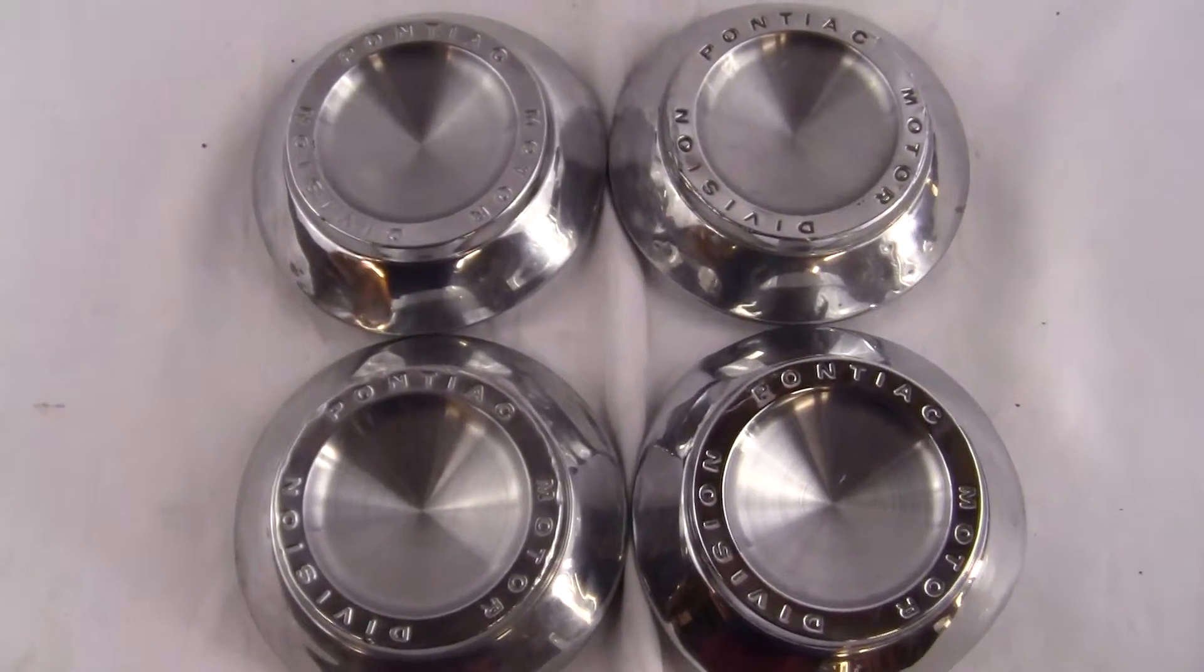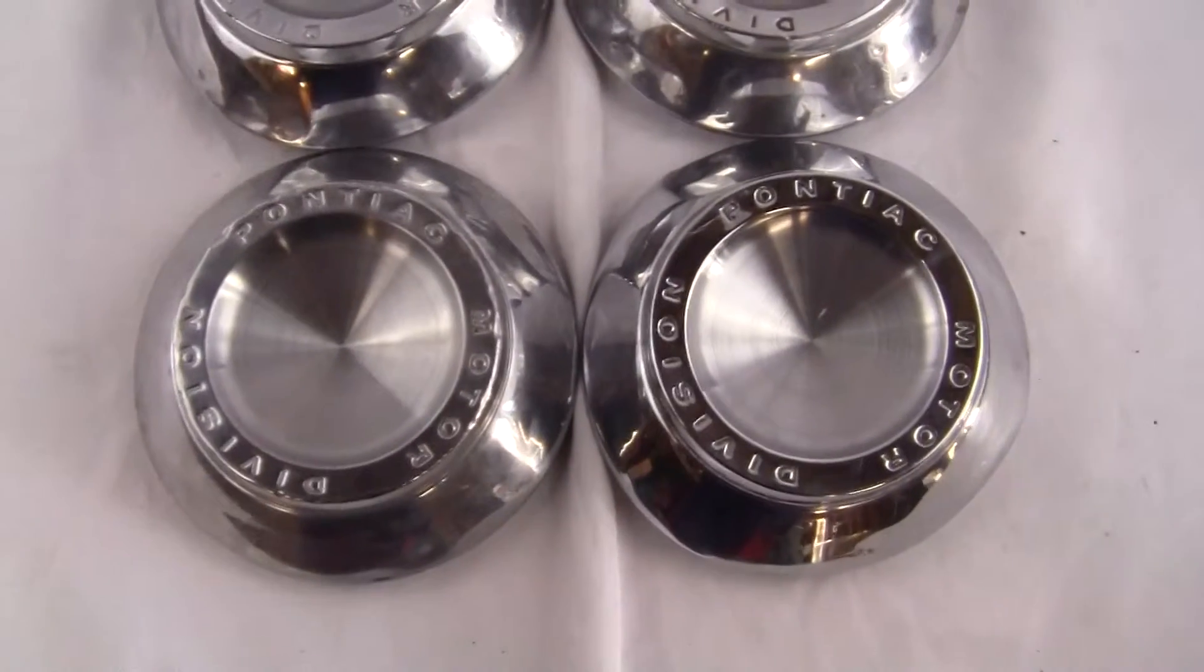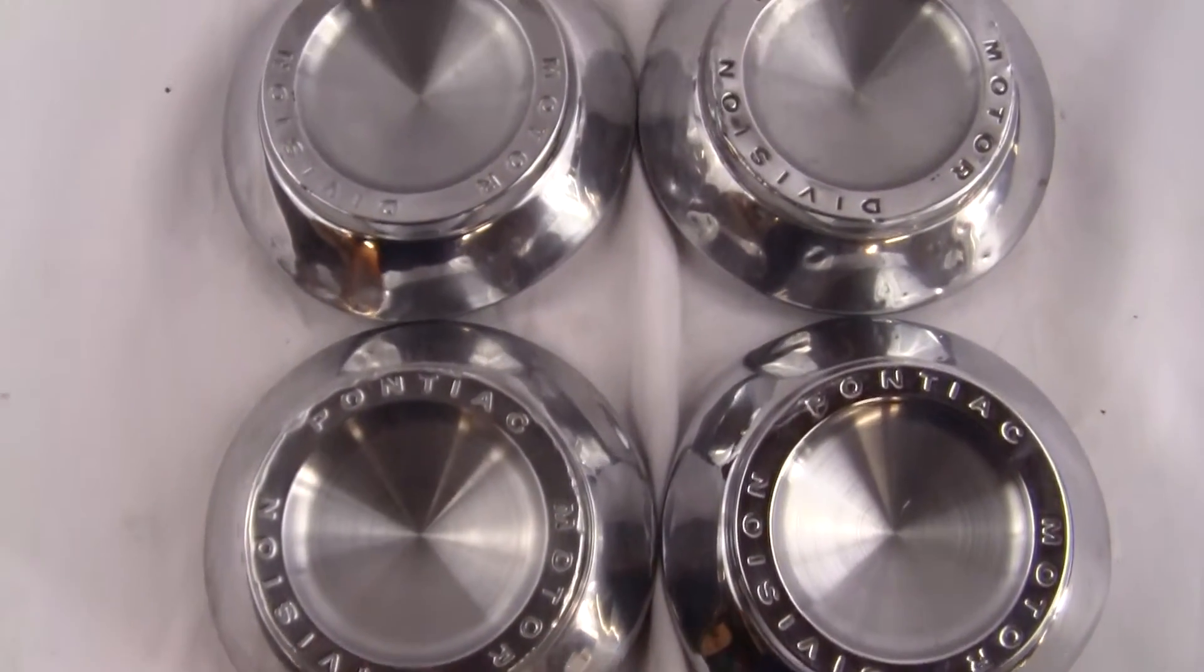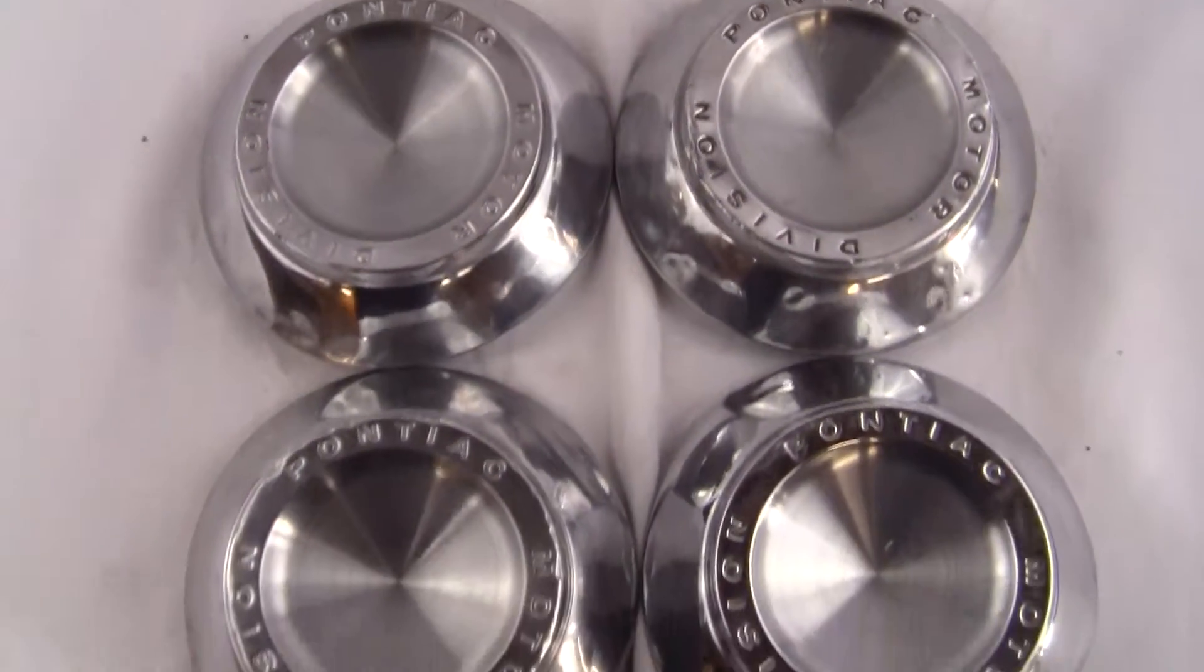Up for auction is an original set of 1963 Pontiac 8-lug hubcaps or center caps. These are for the 8-lug wheels and drums. These were not reproduced. They're very hard to find and expensive when you do find them.